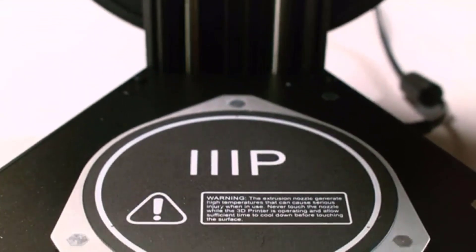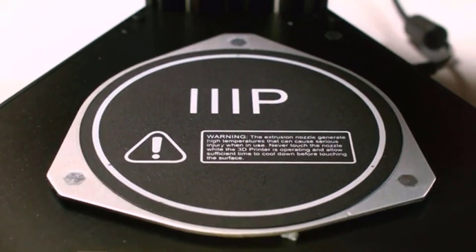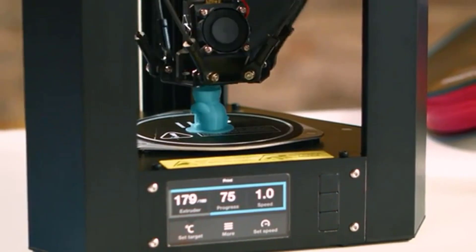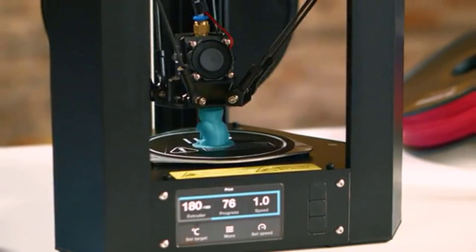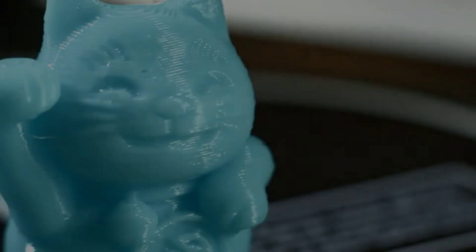Basically, Monoprice tried to squeeze the ease of use and convenience of a pro-grade printer on a low-budget unit. Moreover, the printer has open-source slicer compatibility that enhances its experimentation potential.